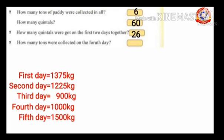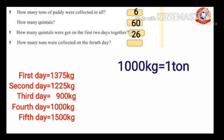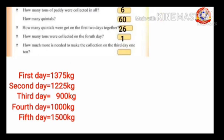Next question: how many tons were collected on the fourth day? On the fourth day, 1000 kilograms of paddy were collected. 1000 kilograms equals one ton. So how many tons were collected on the fourth day? Yes — one ton.